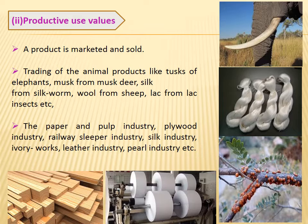The second value is productive value — it is the marketing and selling of material. For example, trading of animal products like tusk of elephant, musk of deer, silk from silkworm, wool from sheep, lac from lac insects, etc. The paper and pulp industries from plants, plywood industry, railway sleeper industry, ivory work, leather industry, pearl industry, etc. are also the productive values of biodiversity.